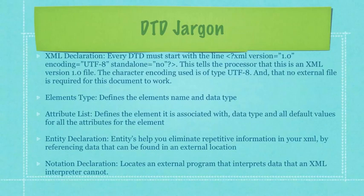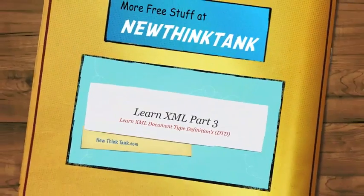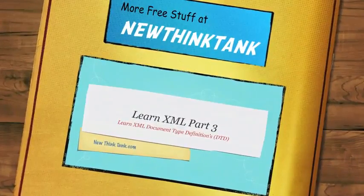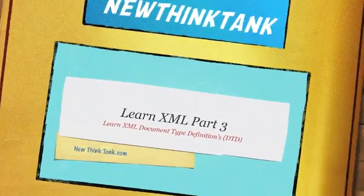Then you have entity declarations. Entities help you eliminate repetitive information in your XML by referencing data that can be found in an external location. And finally you have notation declarations, which locate an external program that interprets data that an XML interpreter cannot — for example, a JPEG file, a video file, or anything that's not basic text. In Part 3 of my Learn XML tutorial, I'm going to completely cover everything there is to know about document type definitions. Till next time.